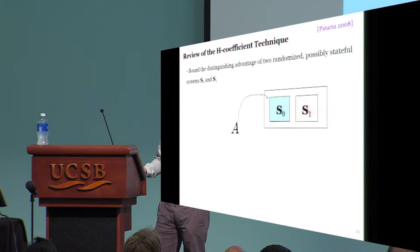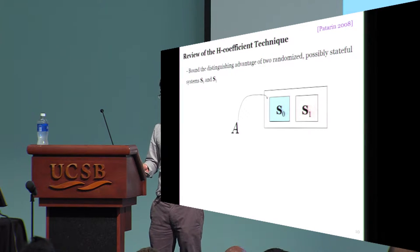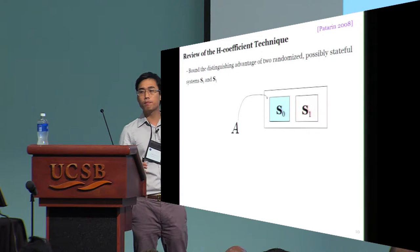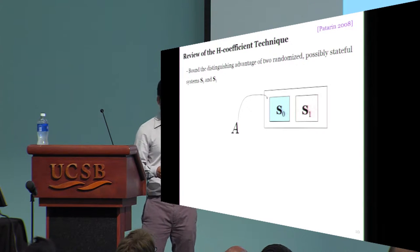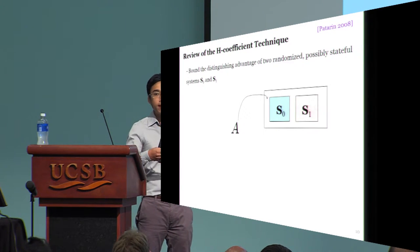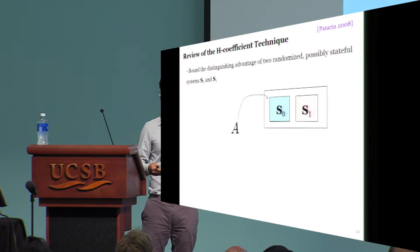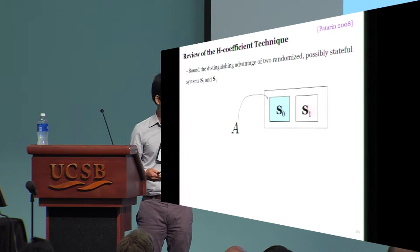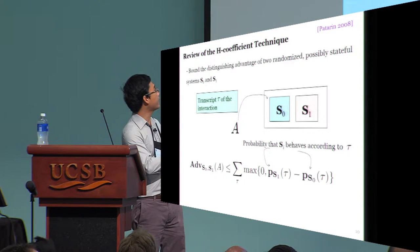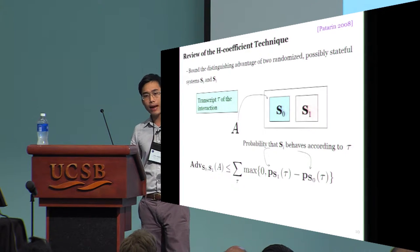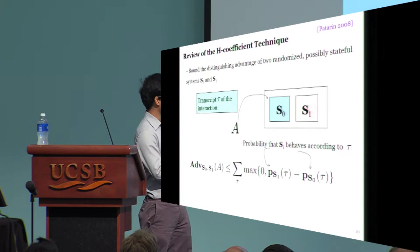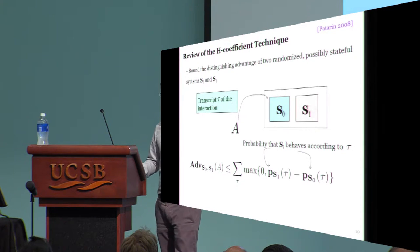To understand our techniques, we first need to review the H-coefficient technique of Patarin. This proof method aims to bound the distinguishing advantage of two randomized systems, S0 and S1. When an adversary interacts with either system, it will make queries to receive answers. This information will be recorded in a transcript tau. The distinguishing advantage is then bounded by the statistical distance between the distributions of the transcripts that the two systems produce.